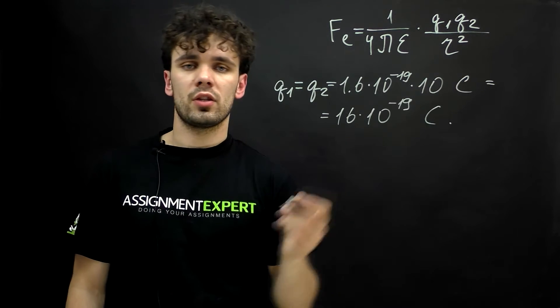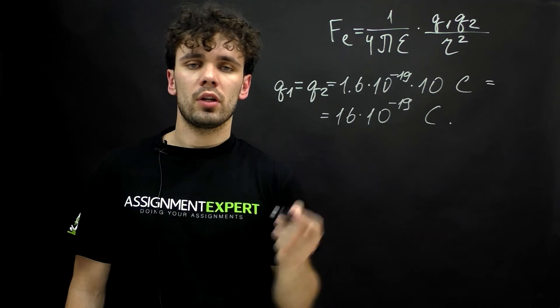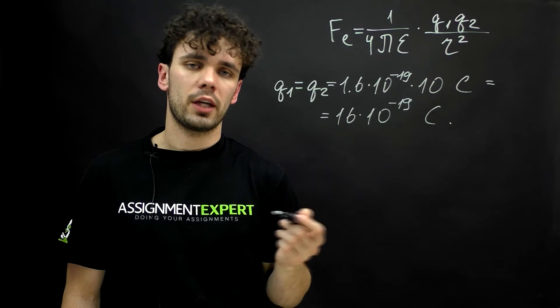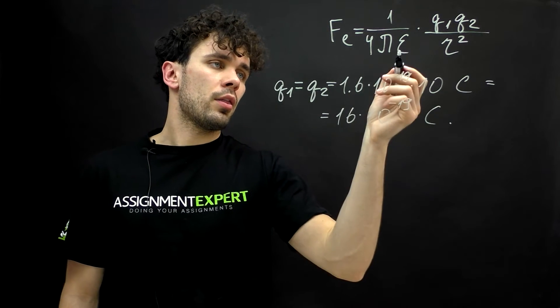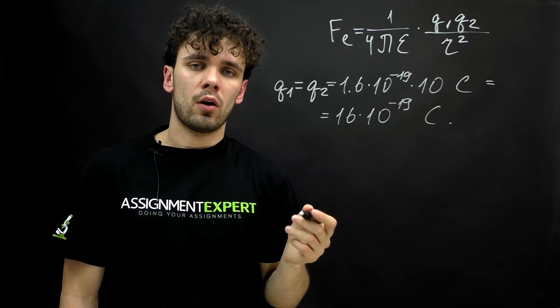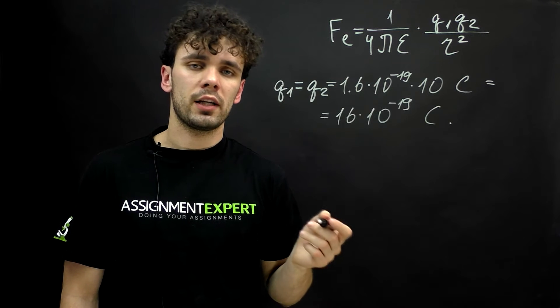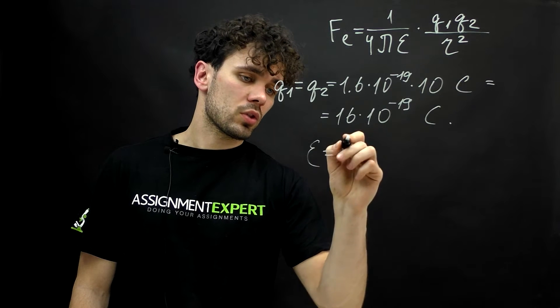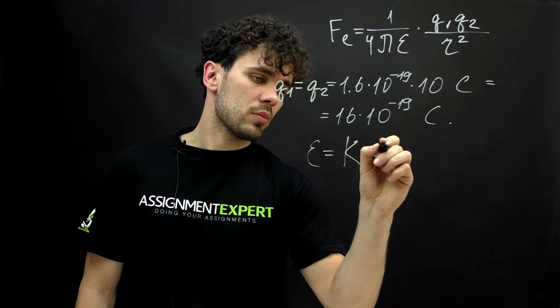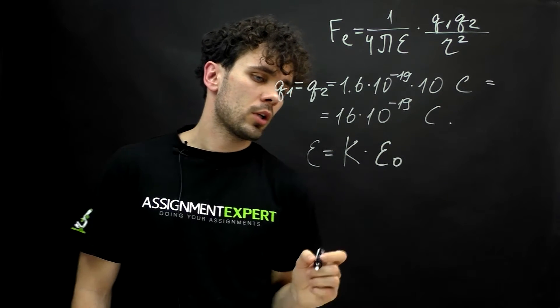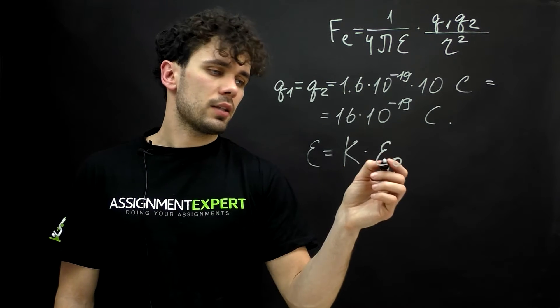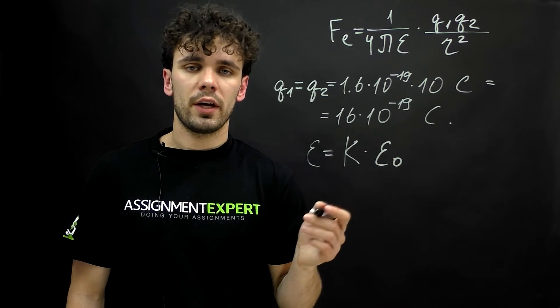r is the distance between them and epsilon is the permittivity of the medium in which the charges of ions are located. This measurement, permittivity of medium, is related with dielectric constant in this formula. Epsilon equals k times epsilon zero. Where k is the dielectric constant and epsilon zero is the permittivity of vacuum.